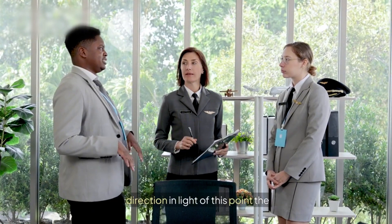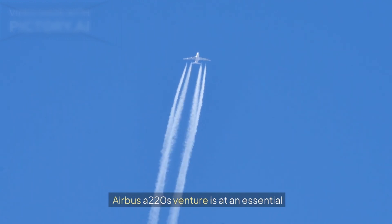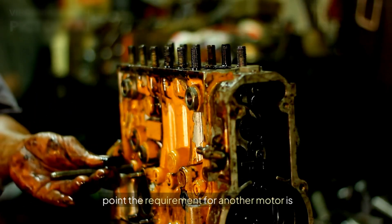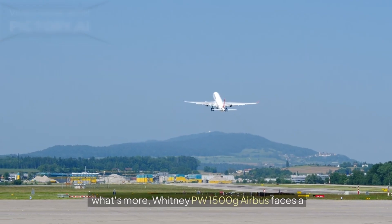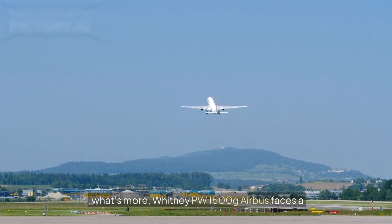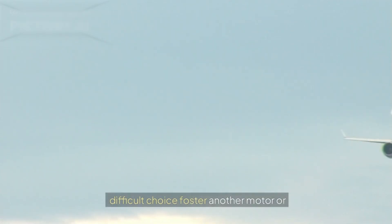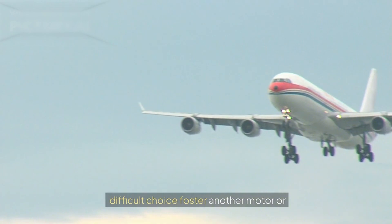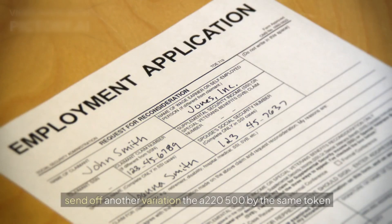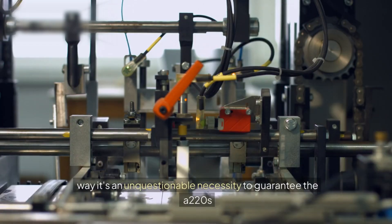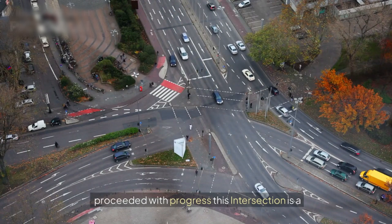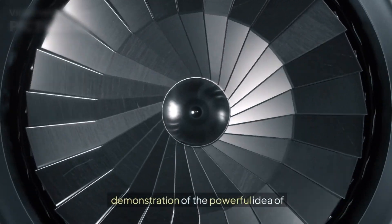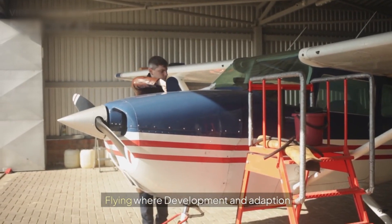In light of this point, the Airbus A220s venture is at an essential point. The requirement for another motor is clear given the issues with the Pratt & Whitney PW 1500-gram. Airbus faces a difficult choice, foster another motor or send off another variation, the A220-500. By the same token way, it's an unquestionable necessity to guarantee the A220s proceeded with progress. This intersection is a demonstration of the powerful idea of flying, where development and adaption are vital.